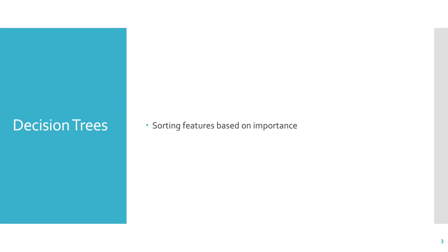With decision trees, we sort features by their importance for the classification problem. We do that by choosing the feature that gives the best information gain at each split. This greedy approach chooses the most important feature first, the second most important next, and so on. This is a good approach and it works well, but it only orders the features in terms of importance. It doesn't tell us exactly how important they are.